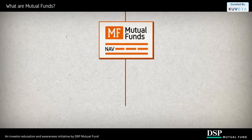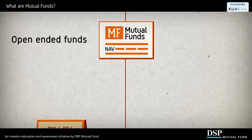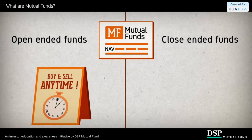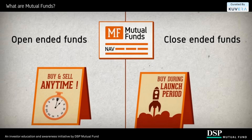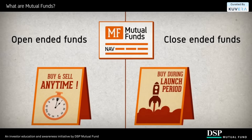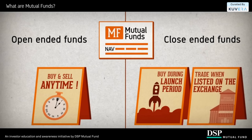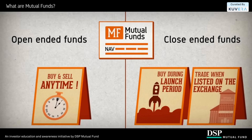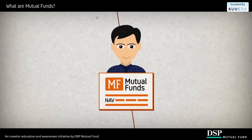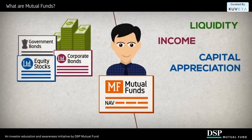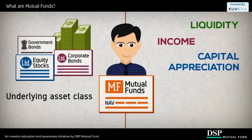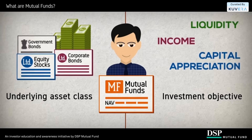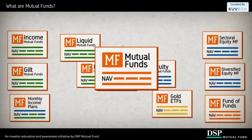More importantly, check if the fund's investment objective matches your own. Mutual funds are primarily classified as open-ended funds, where you can buy and sell units at any point in time, or close-ended funds, where you can buy only in the launch period, after which the units are listed only on the stock exchange. In addition, you can also choose a mutual fund based on the underlying asset class and the investment objective of the fund.